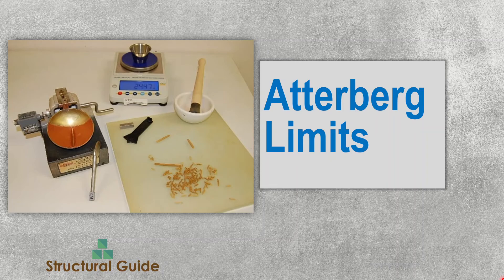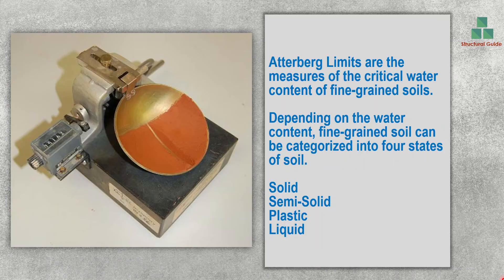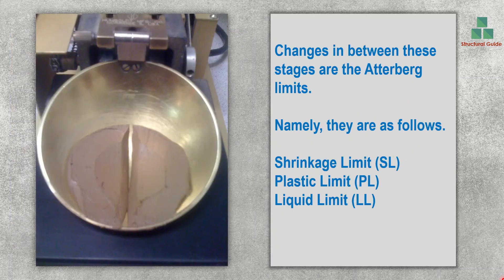Atterberg limits are the measures of critical water content of fine-grained soil. Depending on the water content, fine-grained soil can be categorized into four main states: solid state, semi-solid, plastic, and liquid state. These are the four main categories of the different states of soil.